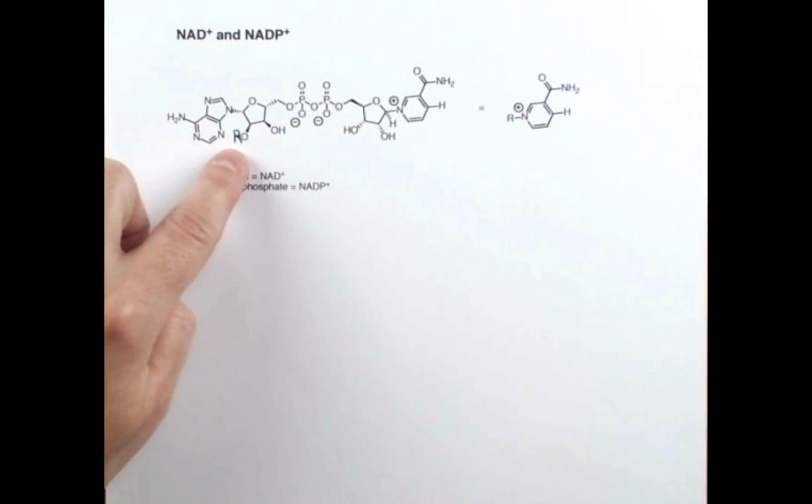We have a little R group here, so if this group is hydrogen, this is NAD+, and if this group is phosphate, this is NADP+. This compound is an enzyme helper, so enzymes speed up the chemical reactions in your cells, and they can do a little bit of chemistry on their own because they're made up of amino acids.